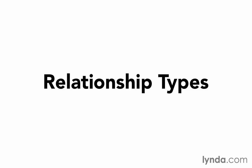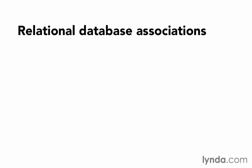ActiveRecord provides something called associations that allow us to define these relationships. We'll start out by looking at the general types of database relationships, and then learn how Rails handles each one. There are three main relational database types: one-to-one, one-to-many, and many-to-many. To help you visualize each one, let's use a concrete example.